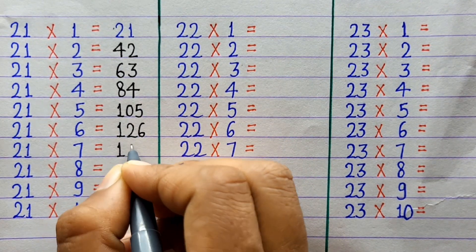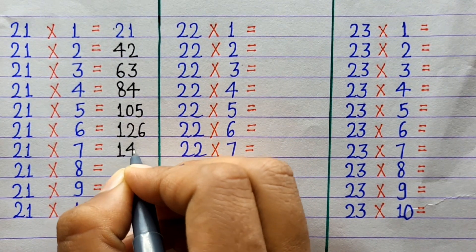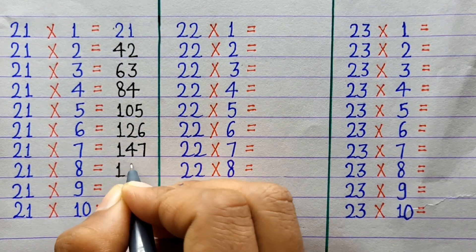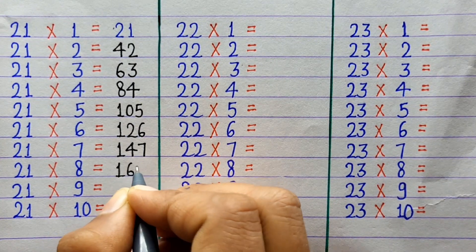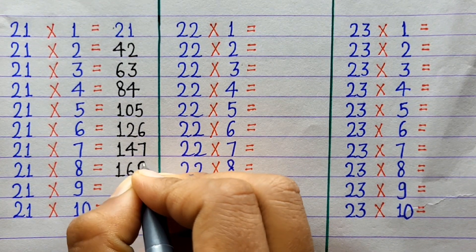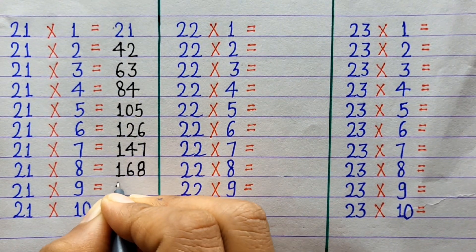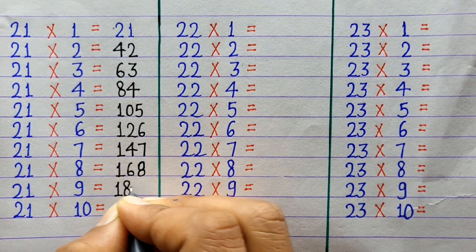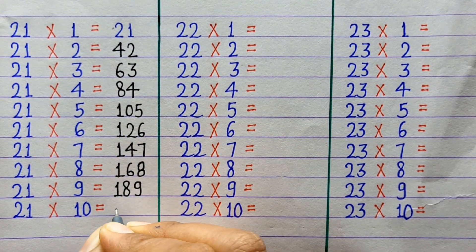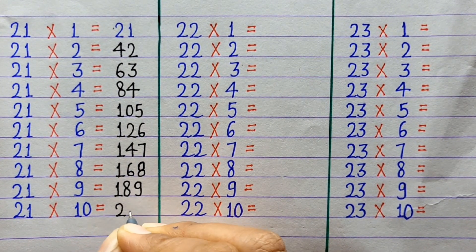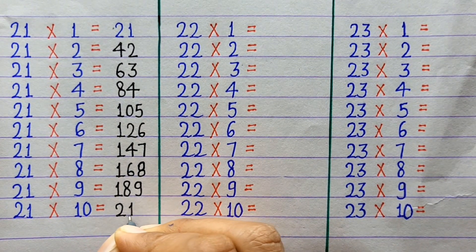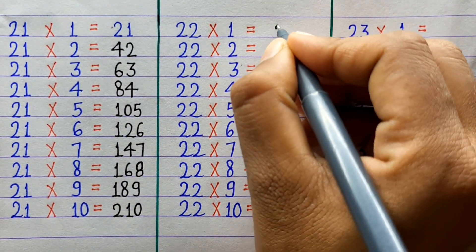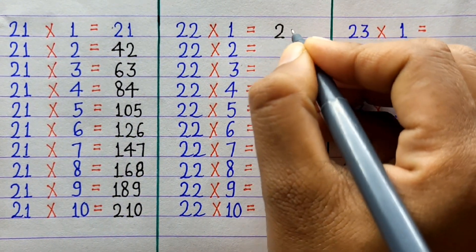21×7=147, 21×8=168, 21×9=189, 21×10=210.